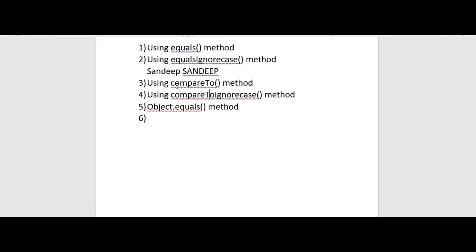The compareTo method is the actual comparison method, unlike equals and equalsIgnoreCase. It tells us whether two strings are lexicographically equal, or whether one precedes or follows the other. If you want to sort strings lexicographically, the compareTo method is used — it is also called the natural order of strings. It returns 0 if two strings are the same, less than 0 if the calling string comes before the argument string, and greater than 0 if the calling string comes after the argument string. It compares the ASCII/Unicode values of the characters.